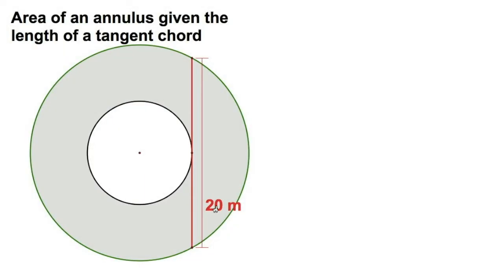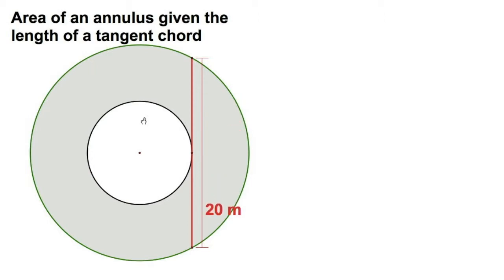Welcome to Naughty Notes. Here we have a really fun problem. We've got an annulus where we know the length of the tangent chord — in this case, 20 meters. It's tangent to the inner circle and a chord to the big circle. We're going to find the exact area of this annulus.